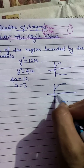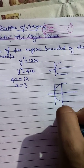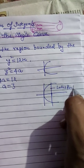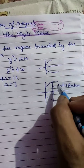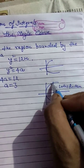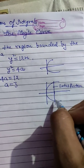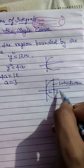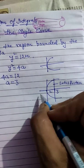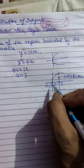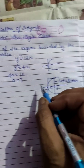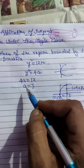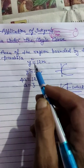The latus rectum is a chord at a distance 'a' from the vertex, perpendicular to the axis. Its total length is 4a — extending 2a above and 2a below the x-axis. Since a = 3, the latus rectum is at x = 3. The vertex of this parabola is at the origin (0, 0).